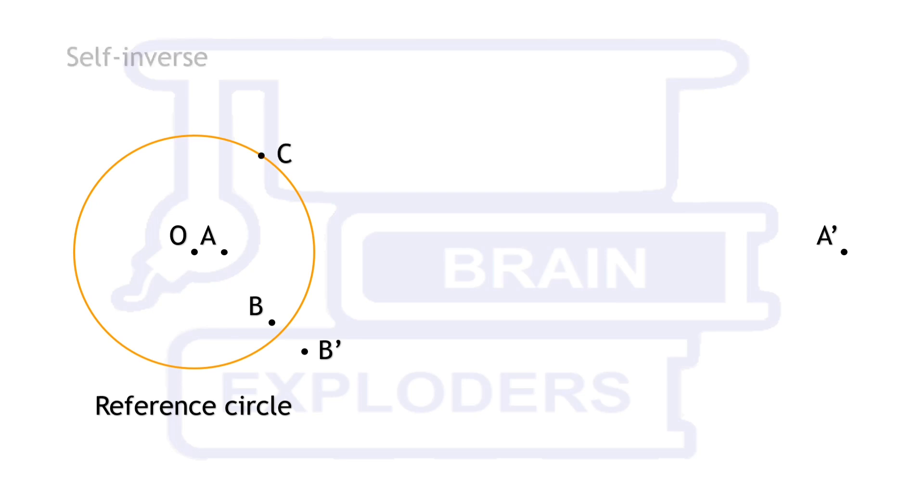If a point lies on the circumference, then it is the inverse of itself. From this, we can conclude that if a circle intersects reference circle, its inverse also intersects reference circle at the same point.